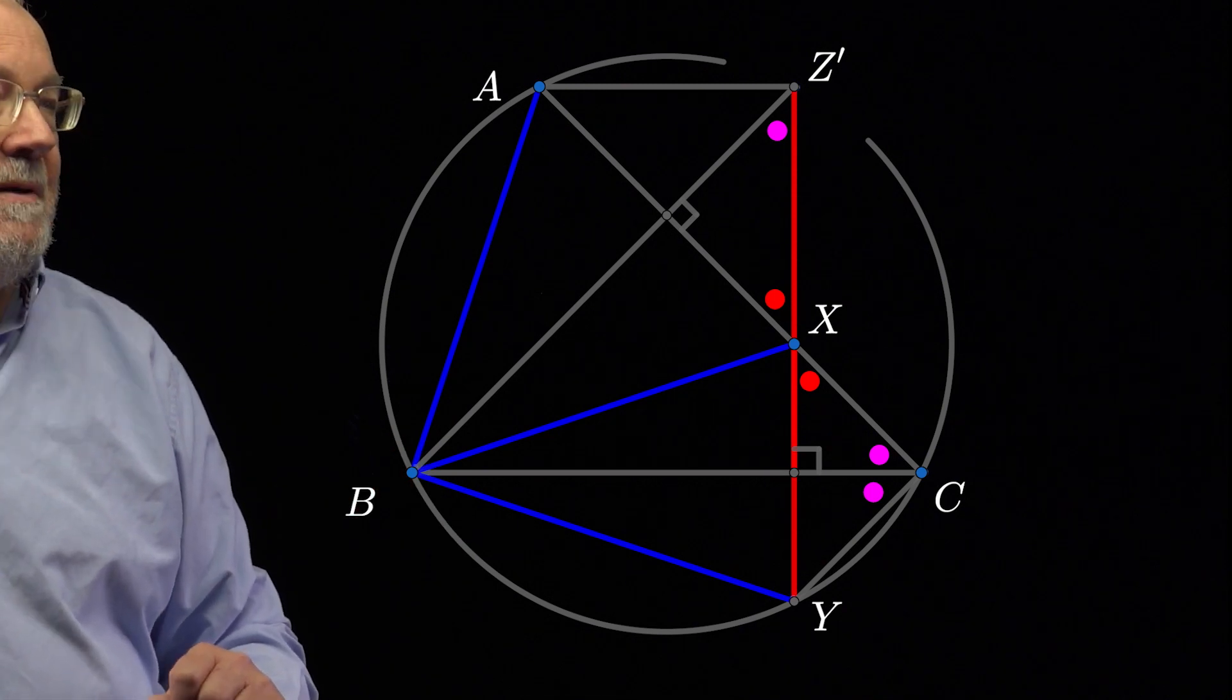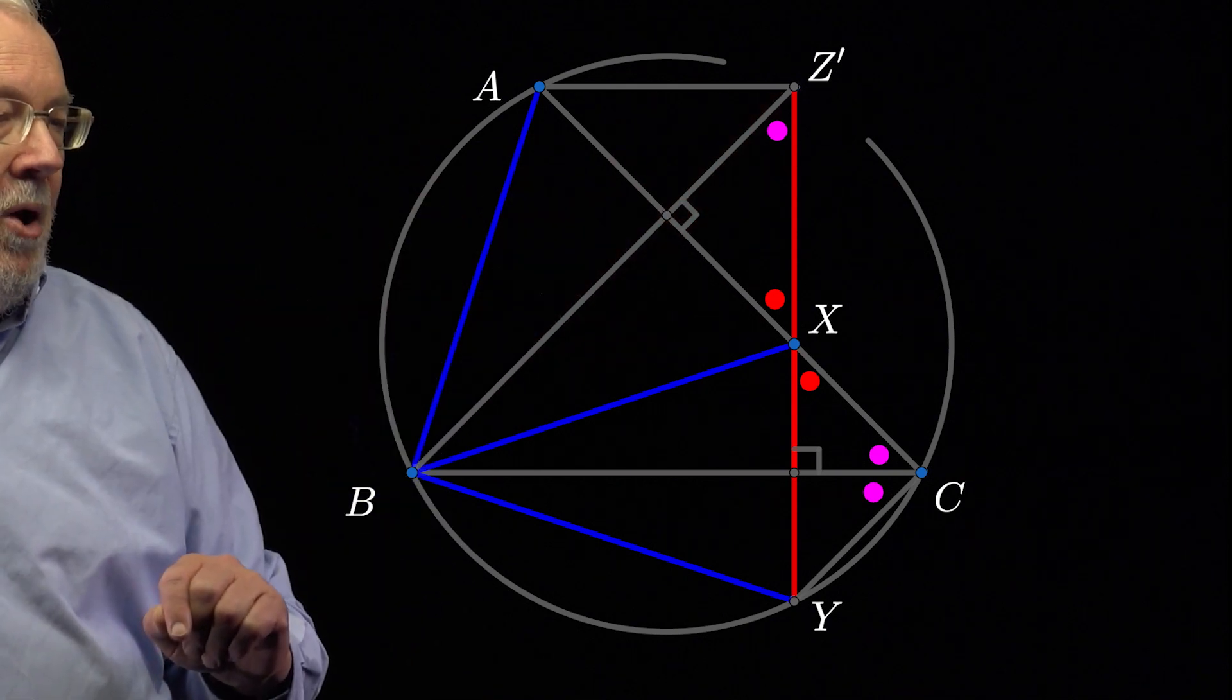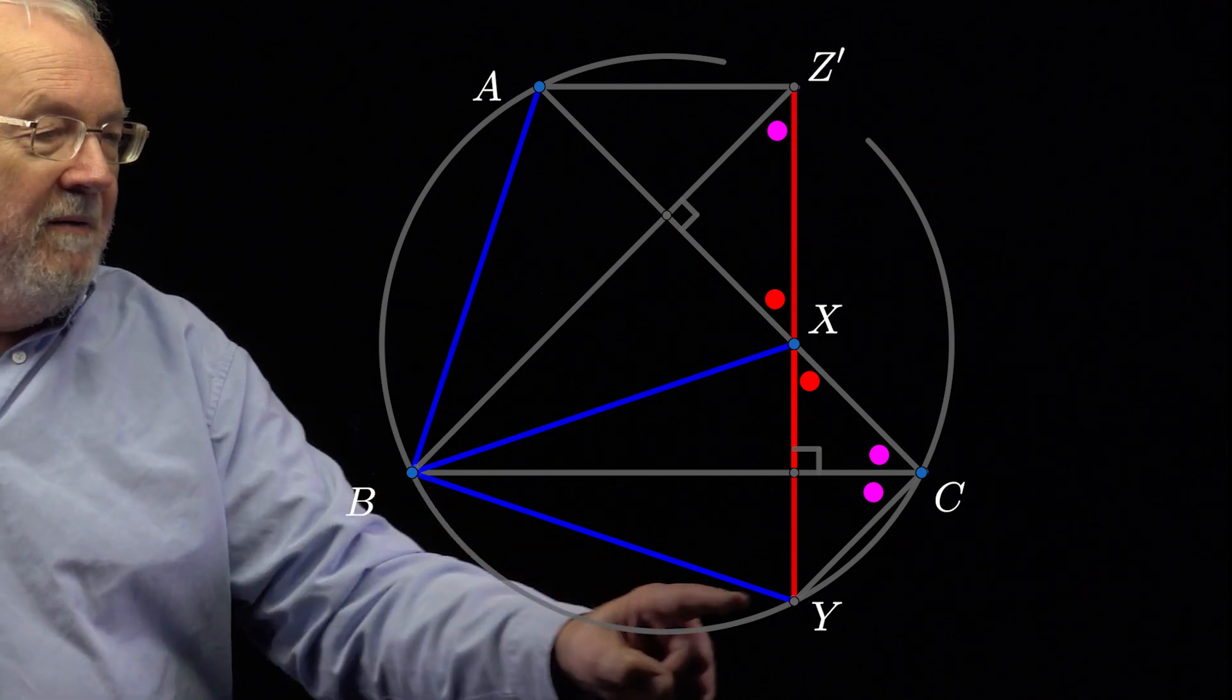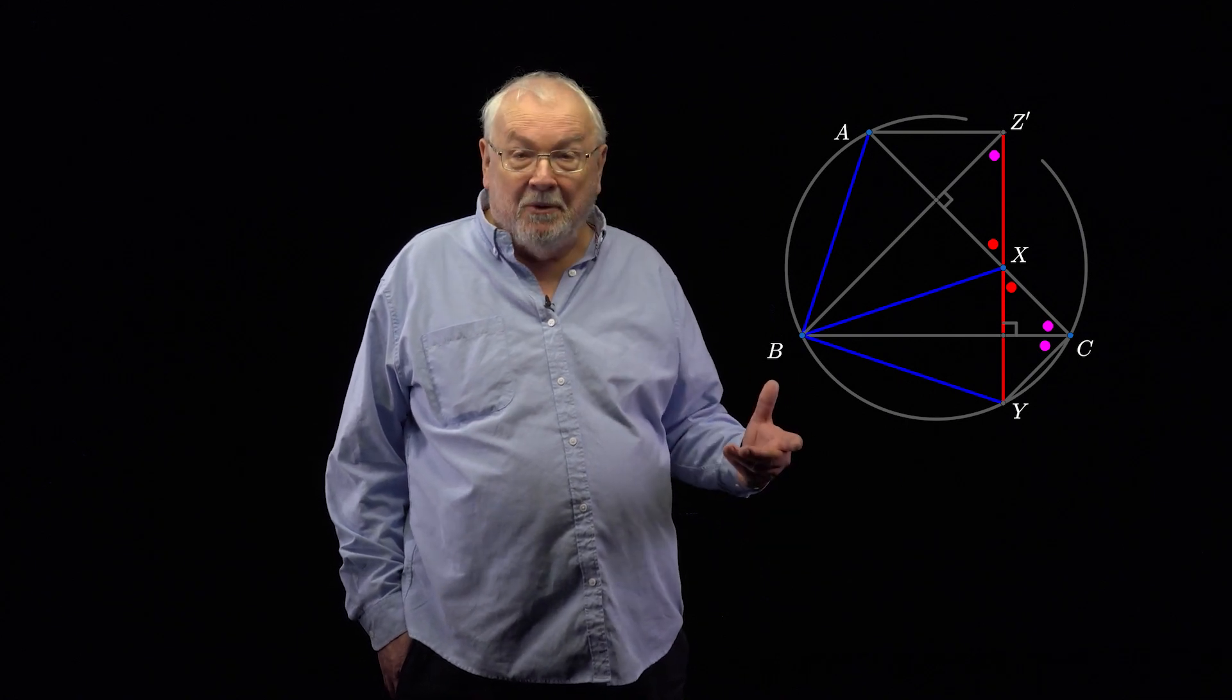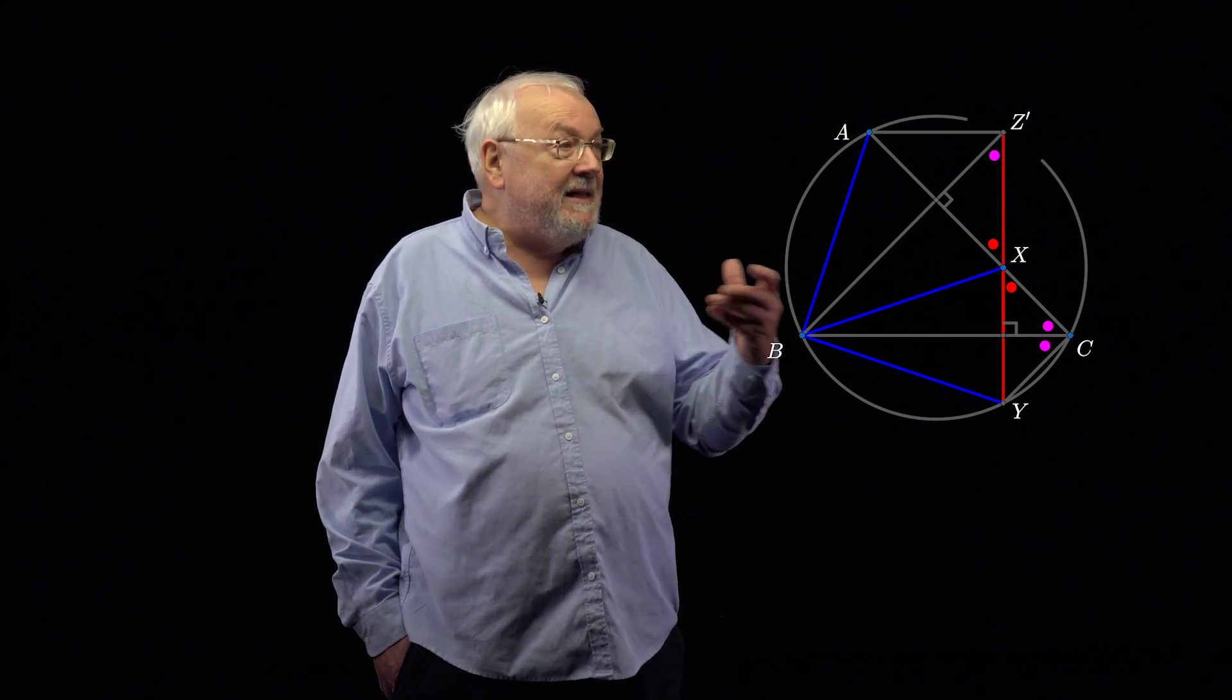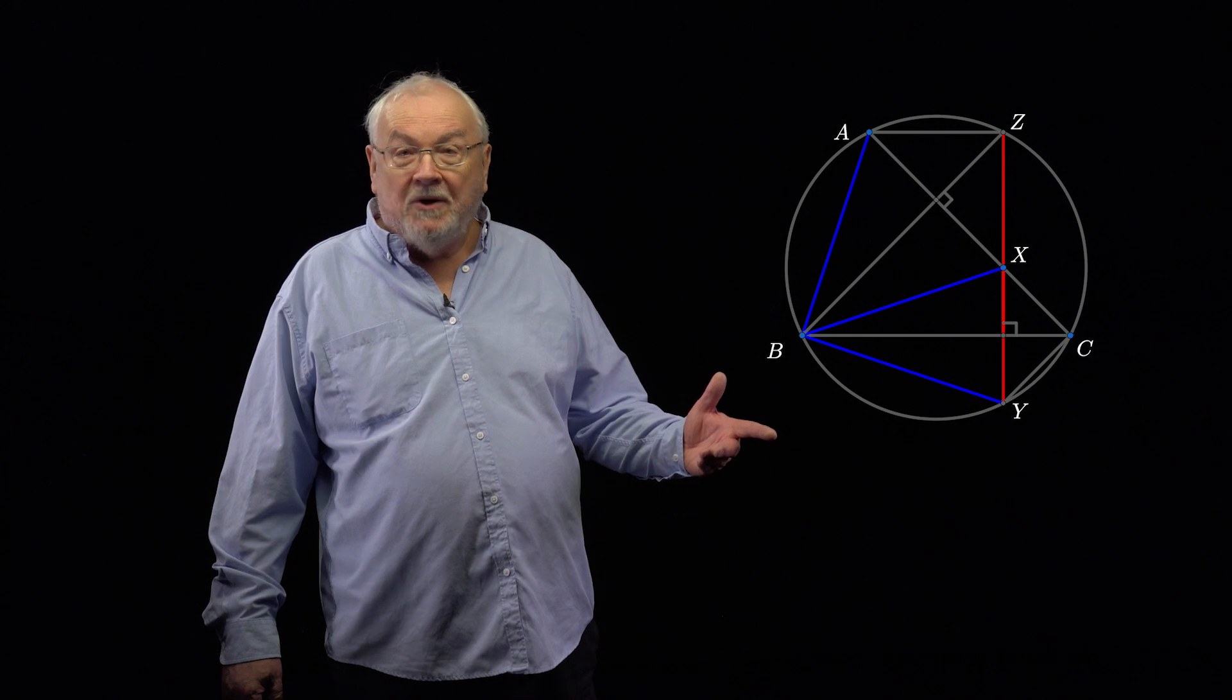Now, we use converse of angles in the same segment. You see this angle is equal to this angle. So, in fact, this point must lie on the circumcircle of the triangle formed by these three points. But that's circle ABC. So, that's exactly what we wanted. The dreams of Z' have become true, and Z' has become Z. So, we've done it. We've solved the problem.